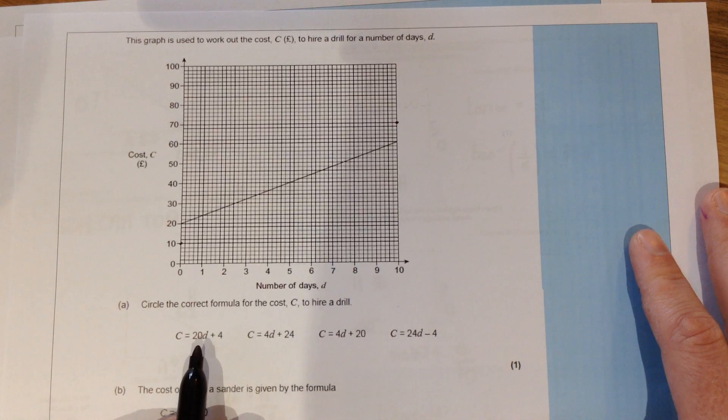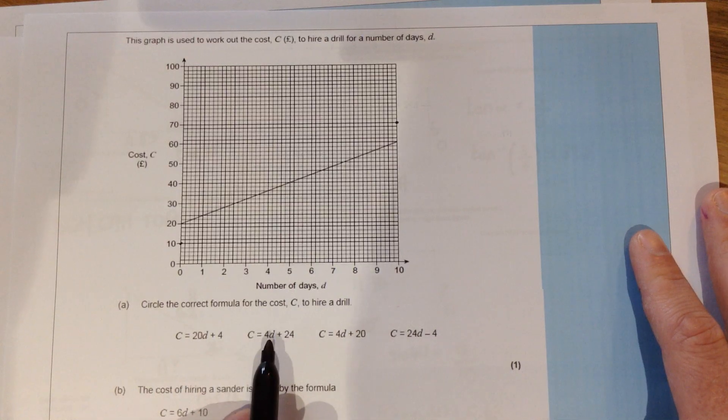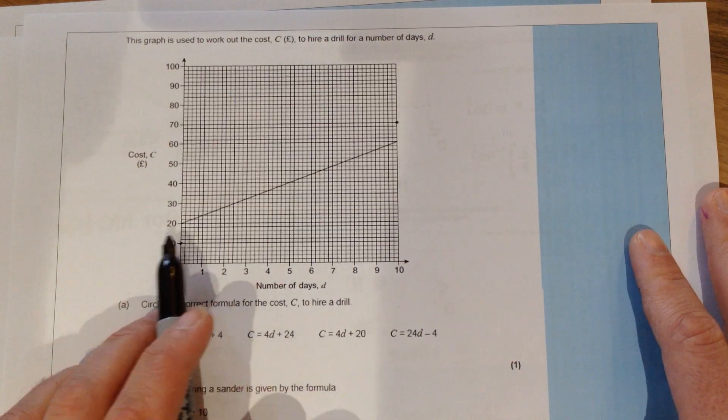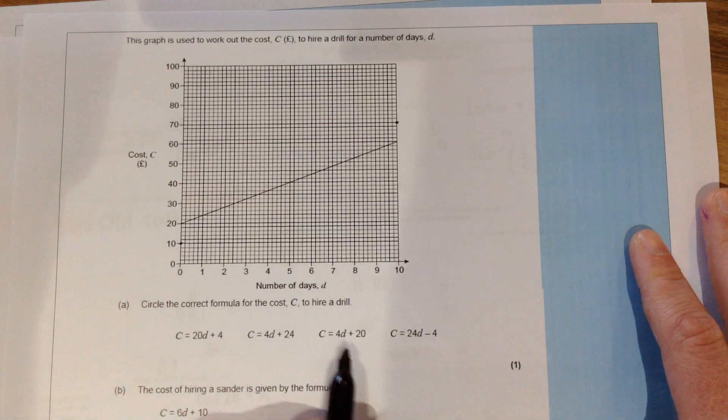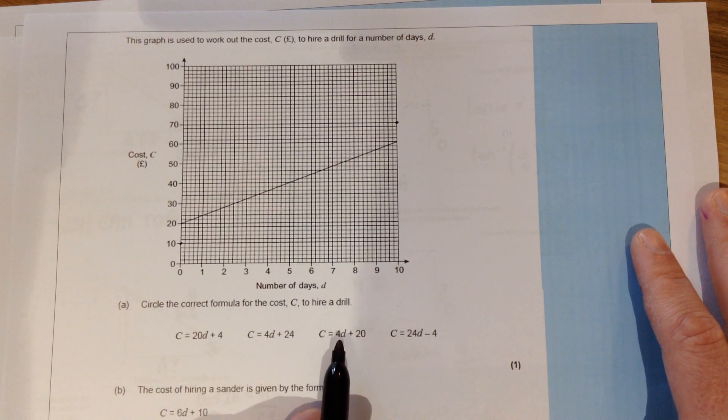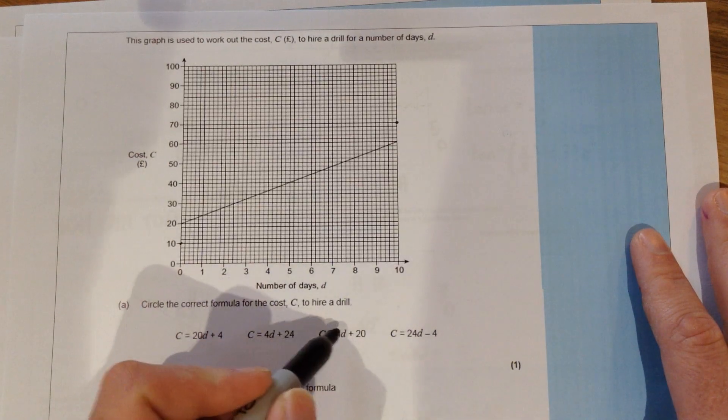So in this one if D was zero, C would still equal four because 20 times nothing is zero so that would just disappear. Here the 4D would disappear if D was zero leaving 24, not what we wanted. This one looks a lot more likely. So if D was equal to nothing, we would have that C equals nothing plus 20. In other words, C equals 20 and that's the one that we wanted.